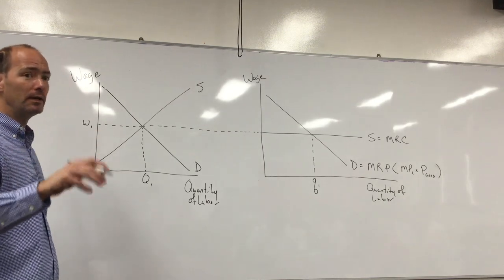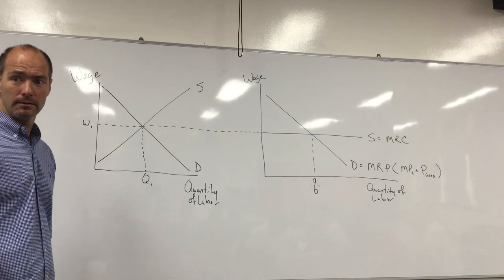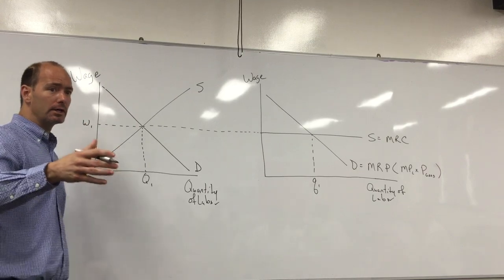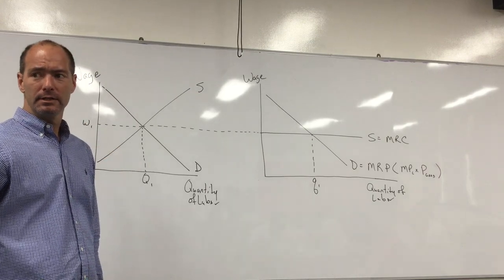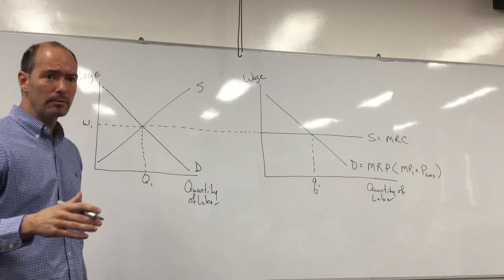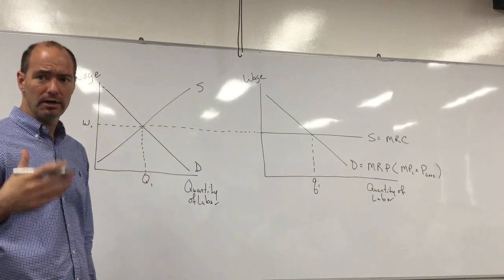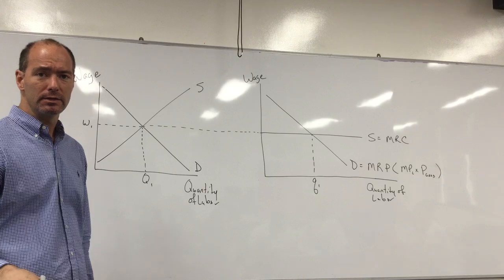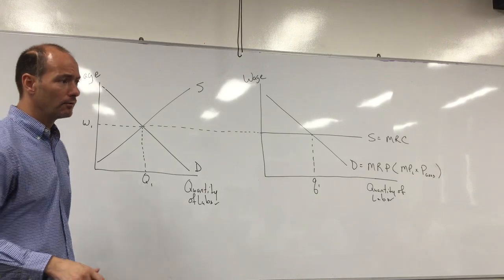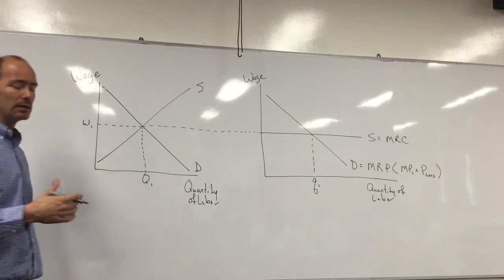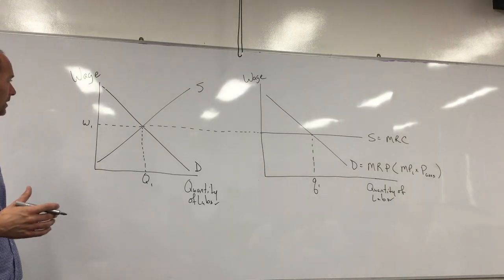Today's topic is perfectly competitive labor markets. We'll study two kinds of labor markets: competitive labor markets, and next time, we'll study labor markets where the firm has some market power and can reduce the wage of workers, which is called monopsony. But today we're looking at perfectly competitive labor markets.